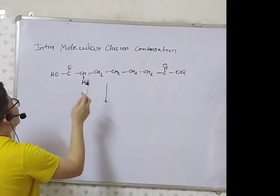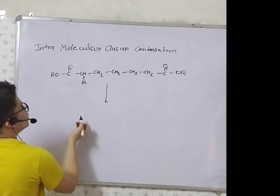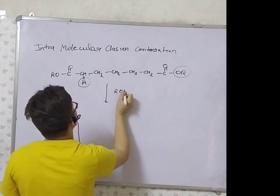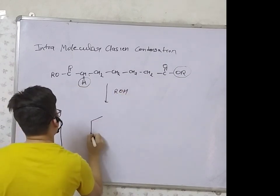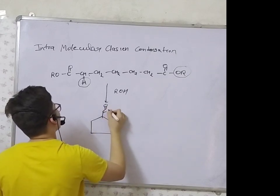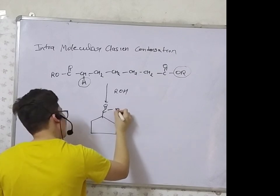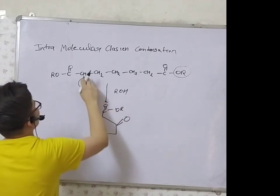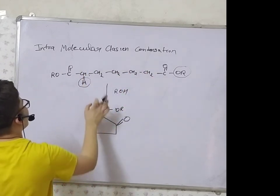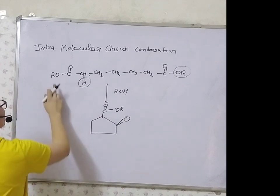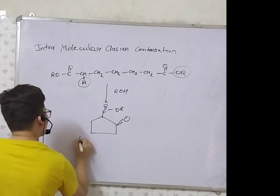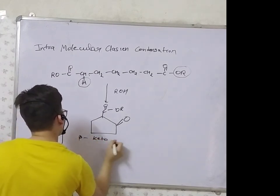Next, we will see the example of intramolecular Claisen Condensation. In this case, the alpha-hydrogen is removed as ROH. A five-membered ring forms in the product, and the resulting compound is a beta-keto ester with a ketone functional group.